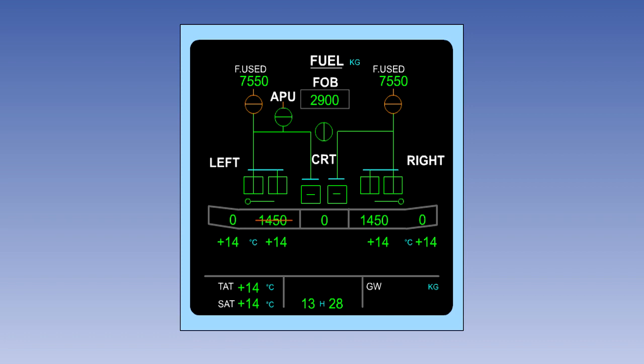In the event that the electrical fuel quantity measuring system fails, or if there is any doubt about the quantity of fuel on board, aircraft are fitted with a simple manual backup system to determine the quantity of fuel on board before flight.